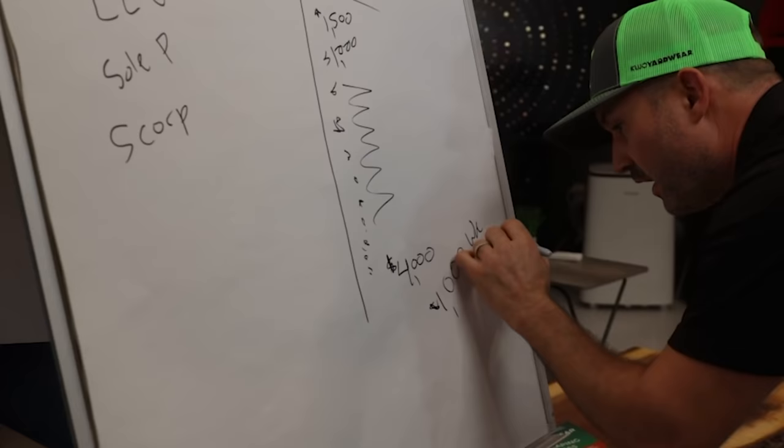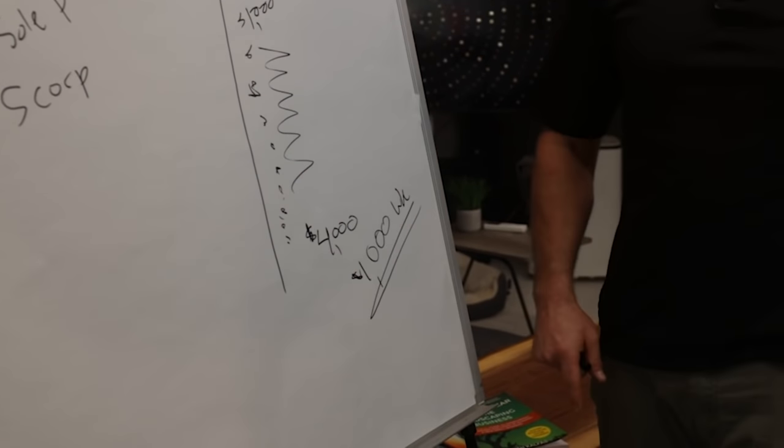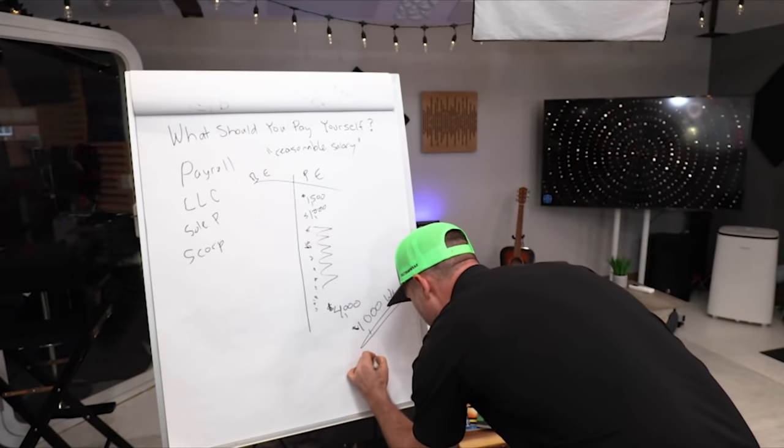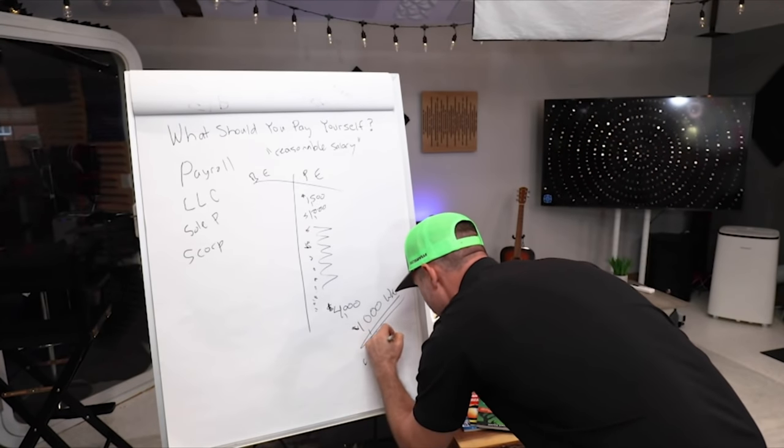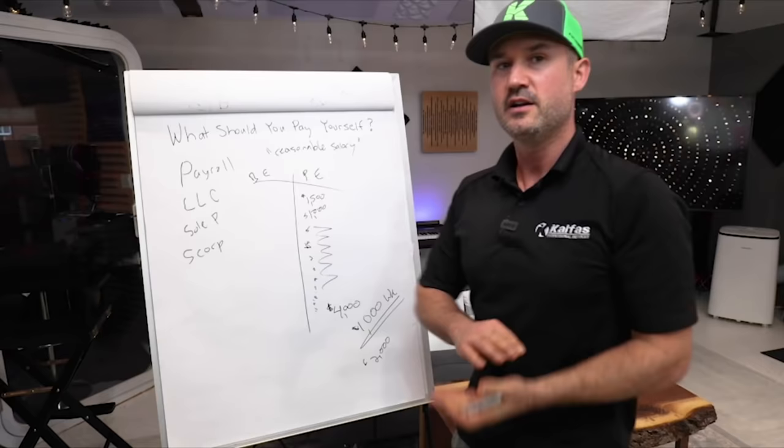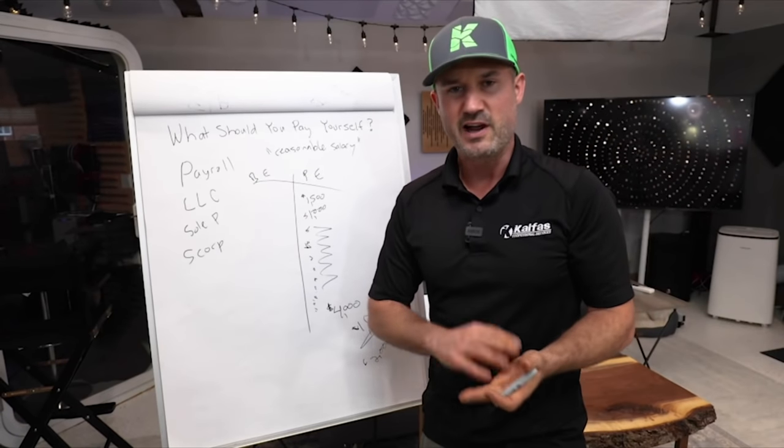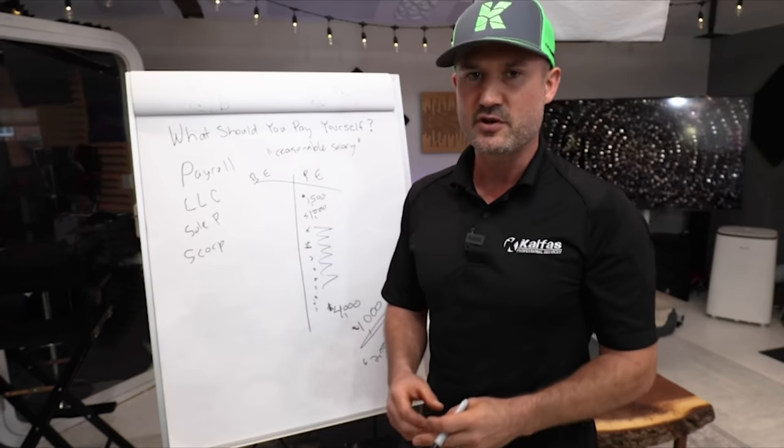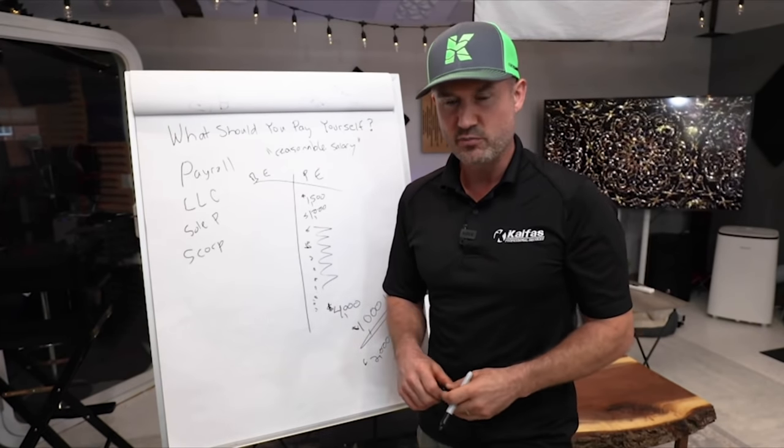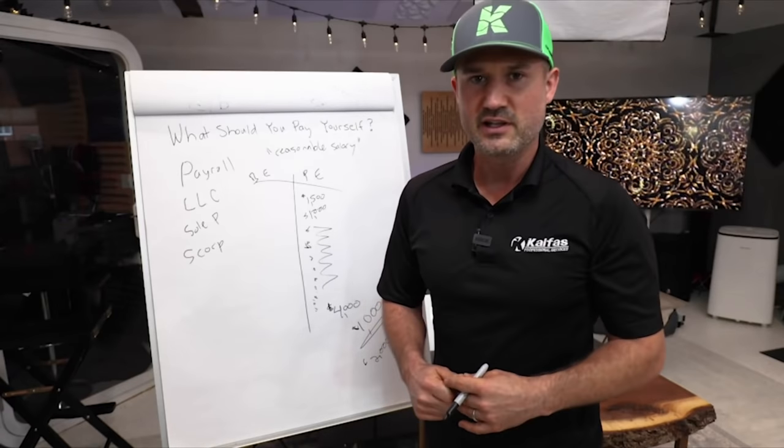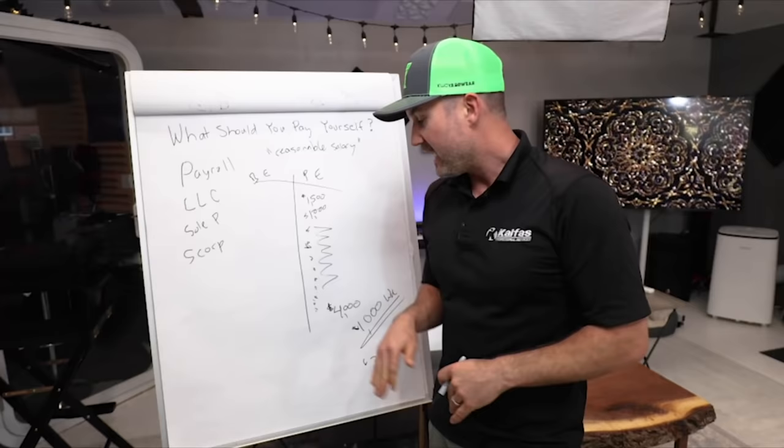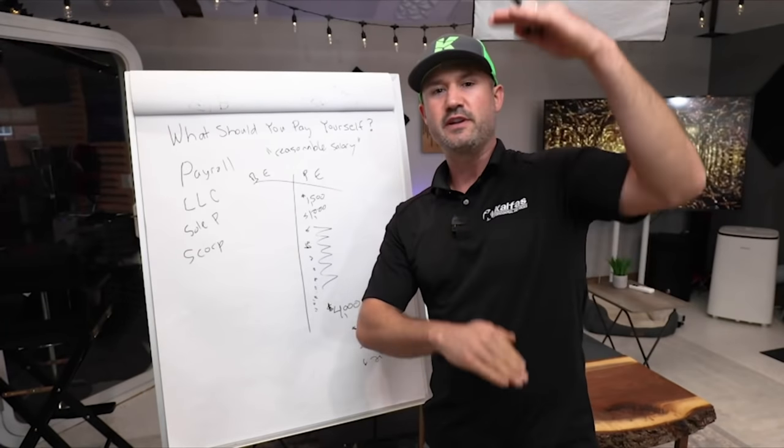Then your personal expenses, basically you should pay yourself a grand a week on payroll, an actual legitimate payroll as a salary. You're paying yourself either bi-weekly, two thousand every other week, getting direct deposited into your account through some type of payroll system. You can run it yourself on QuickBooks, I'll put a link in the description below, you can get a discount on QuickBooks.